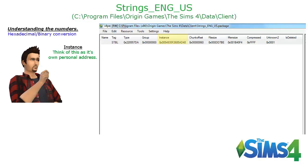You should always try to change this instance number to nothing close to what's already there, especially if you're going to be making a lot of different text or adding text to things you're going to be sharing with other people. You'll see a lot of people take the last two digits — like 48 — and just make it 49, then 50, then 51. If so many people do that with the same instance number, it will cause collisions in the game and you will end up with errors.